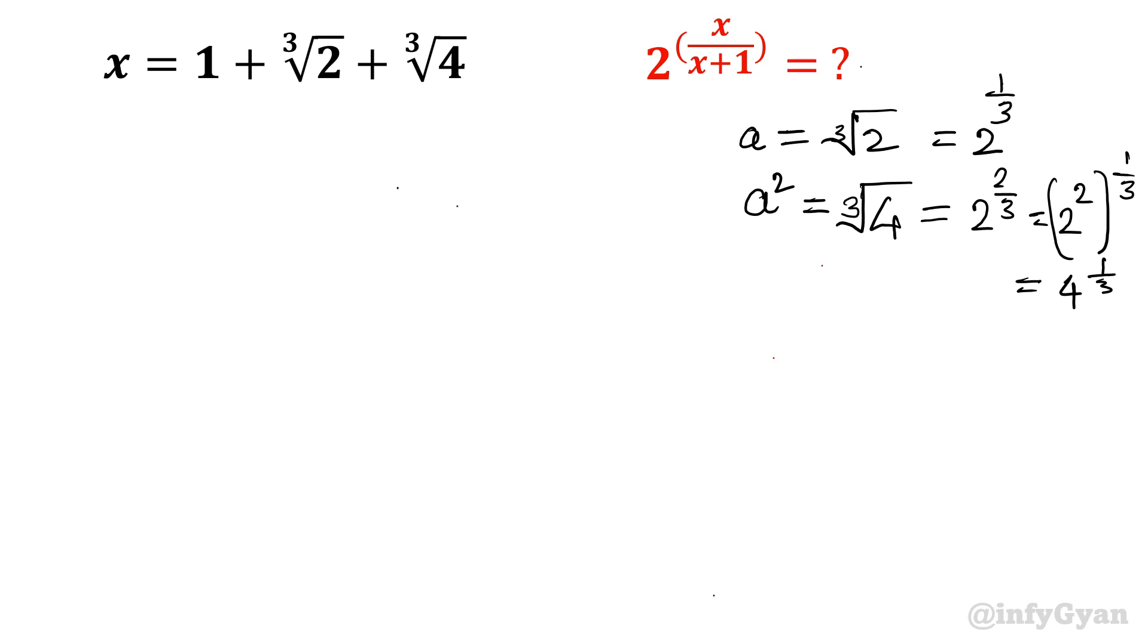Now take cube of the original equation also. So a is equal to cube root 2, that means a cube will be equal to 2. Important. If this is a then cube root 4 will be a square. Now see, x will be equal to 1 plus a plus a square.